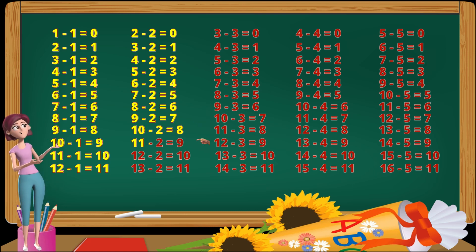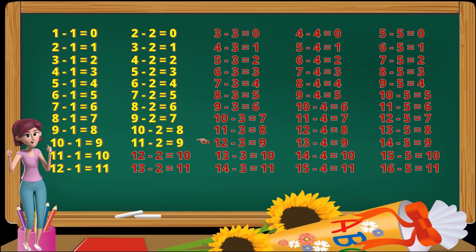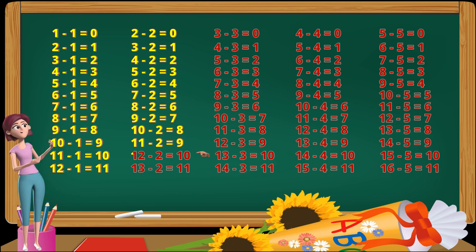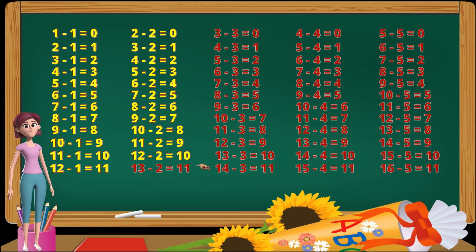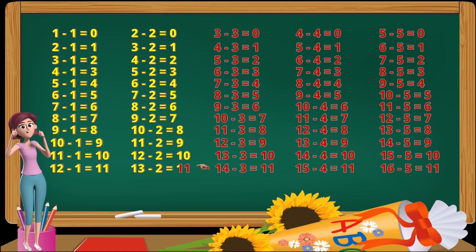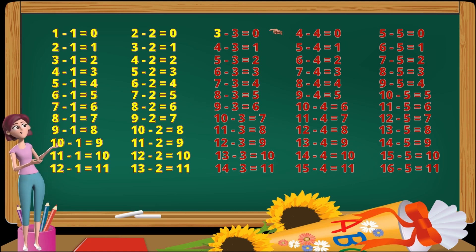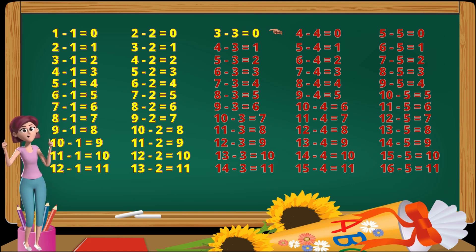11 minus 2 equals 9. 12 minus 2 equals 10. 13 minus 2 equals 11. 3 minus 3 equals 0.